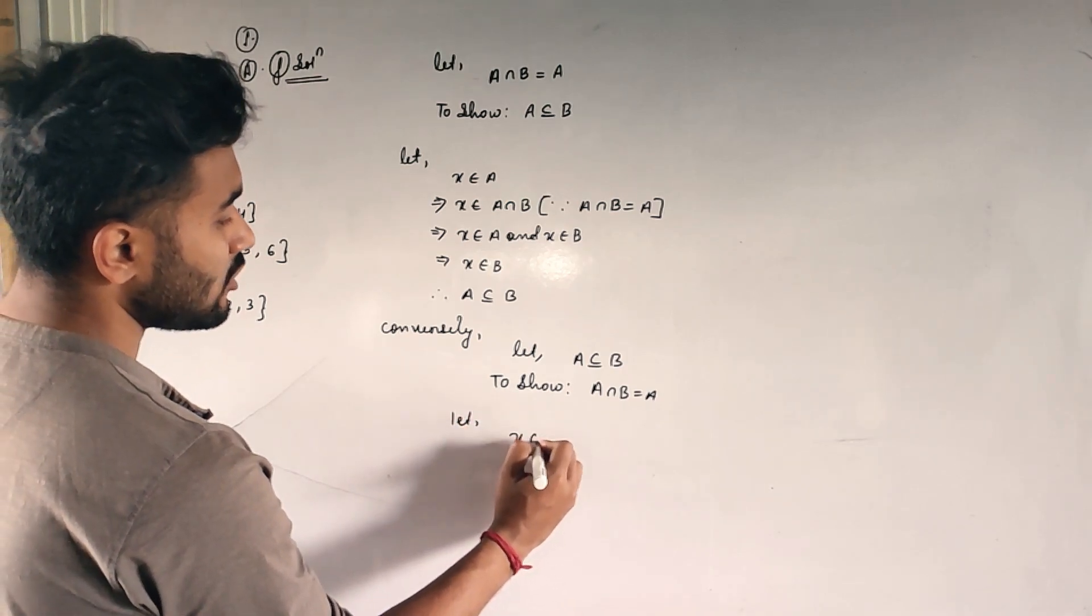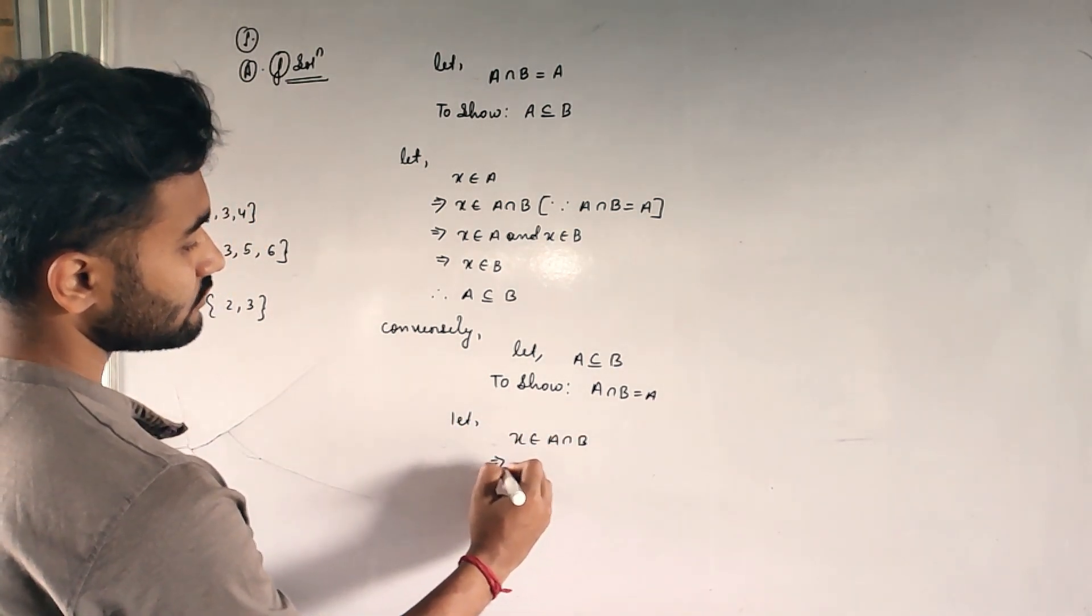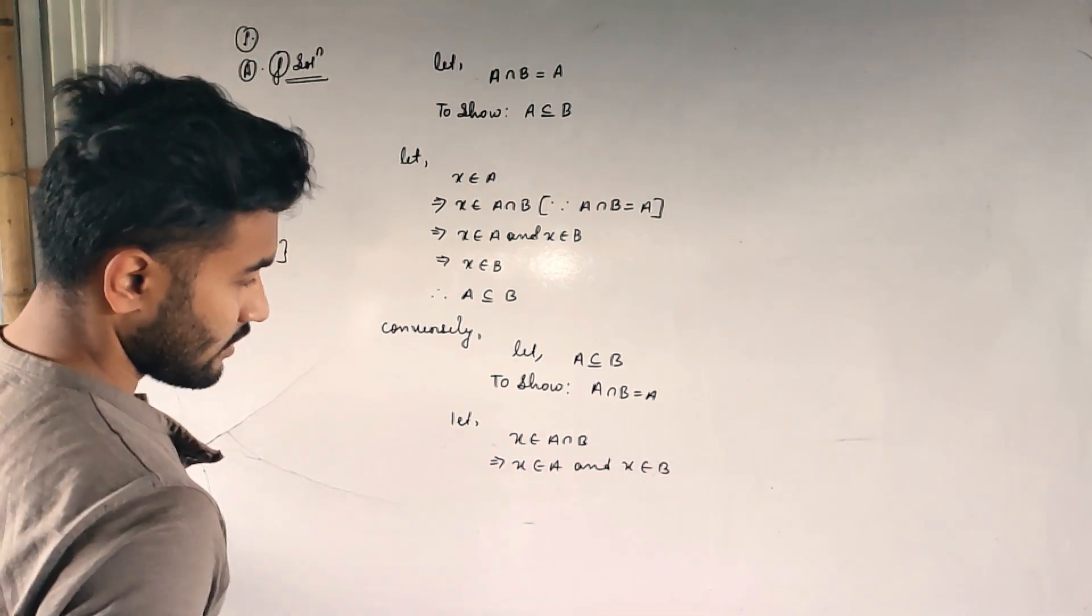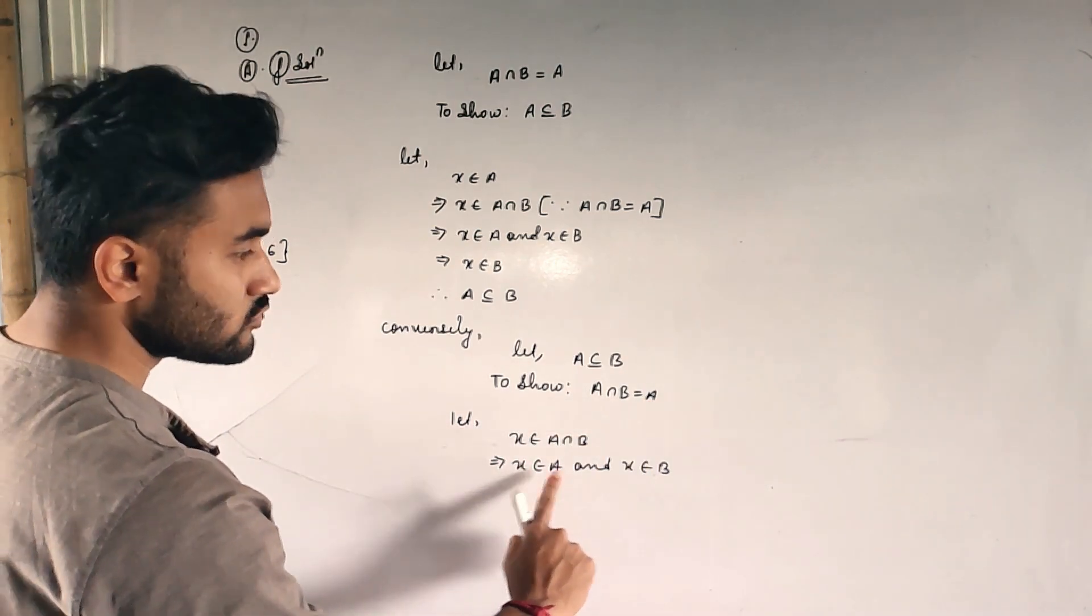So let us start with the left side. Let X belongs to A intersection B. I will use a definition which implies X belongs to A and 100% sure X also belongs to B. I have to finish in A, right?